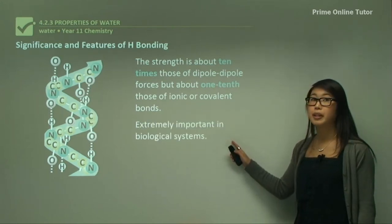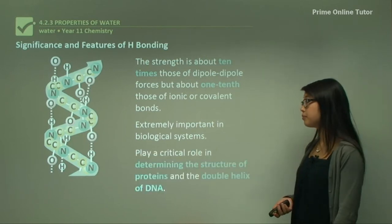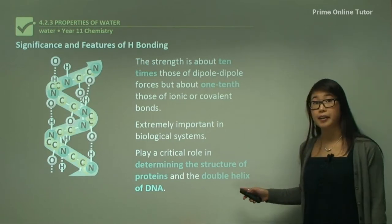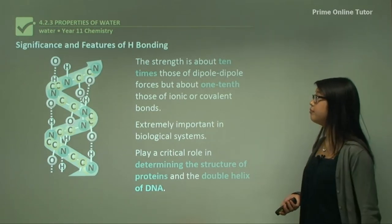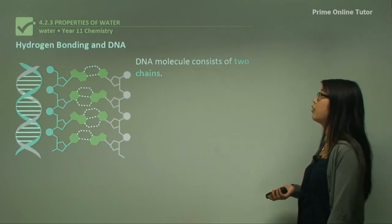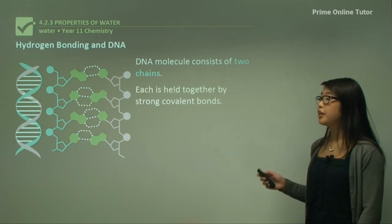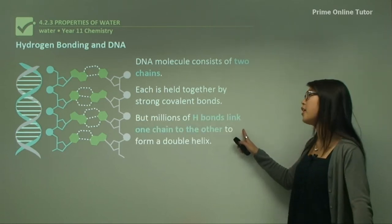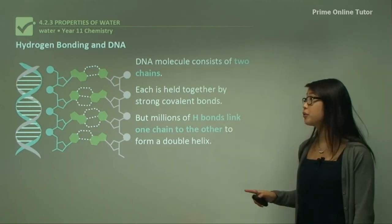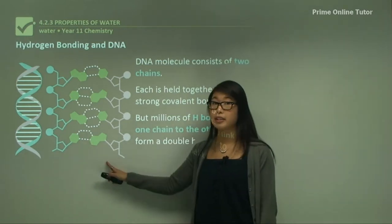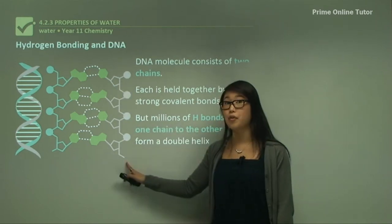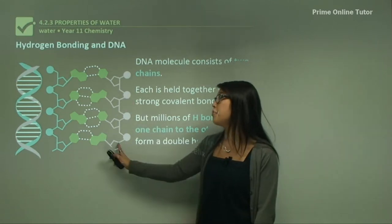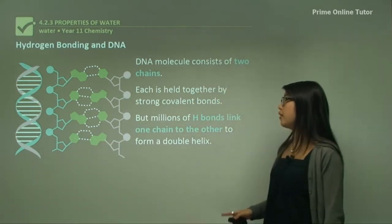Hydrogen bonds are extremely important in biological systems. They play a really important role in the structure of proteins and DNA. DNA has a double helix structure — the DNA molecule consists of two chains, each held together by strong covalent bonds within the chain. But millions upon billions of hydrogen bonds link each chain to the other. So the two chains are not bound by covalent bonds between them — only hydrogen bonds exist between the chains.